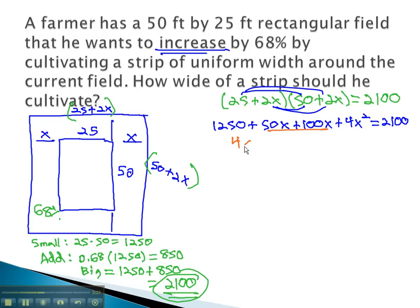Combining like terms and putting terms in order gives us 4x squared, plus 150x, plus 1,250, equals 2,100.